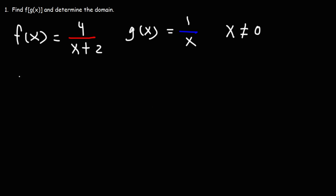For f of x, x plus 2 can't be equal to 0, so that means x can't be negative 2 for f of x. Those are the limitations for those two functions. But what about the composite function f of g of x? What is the domain for that?